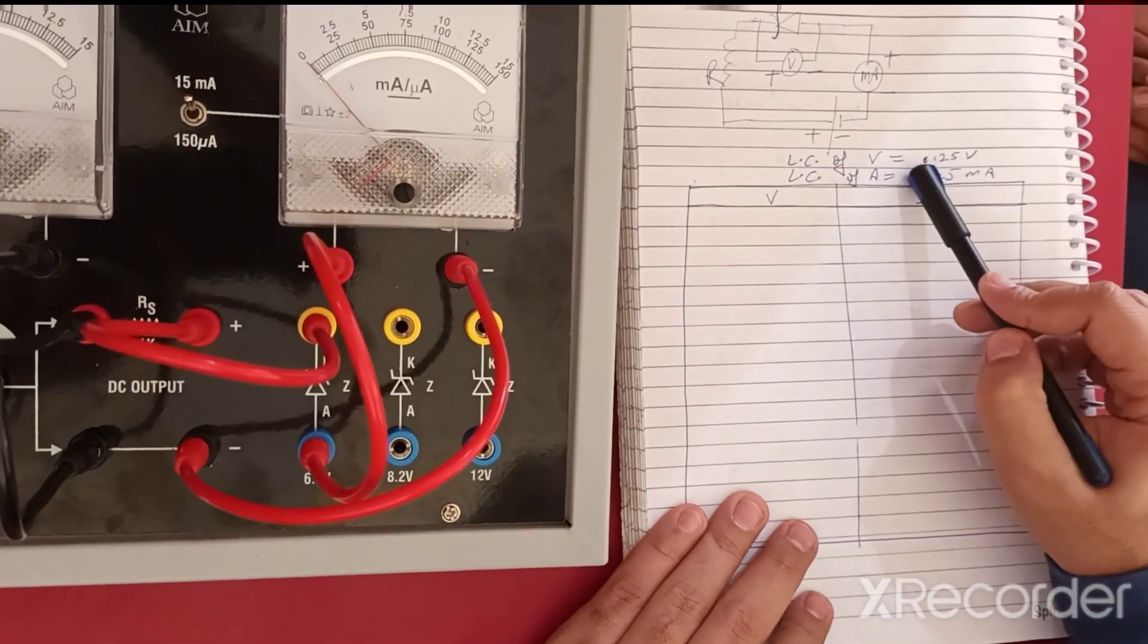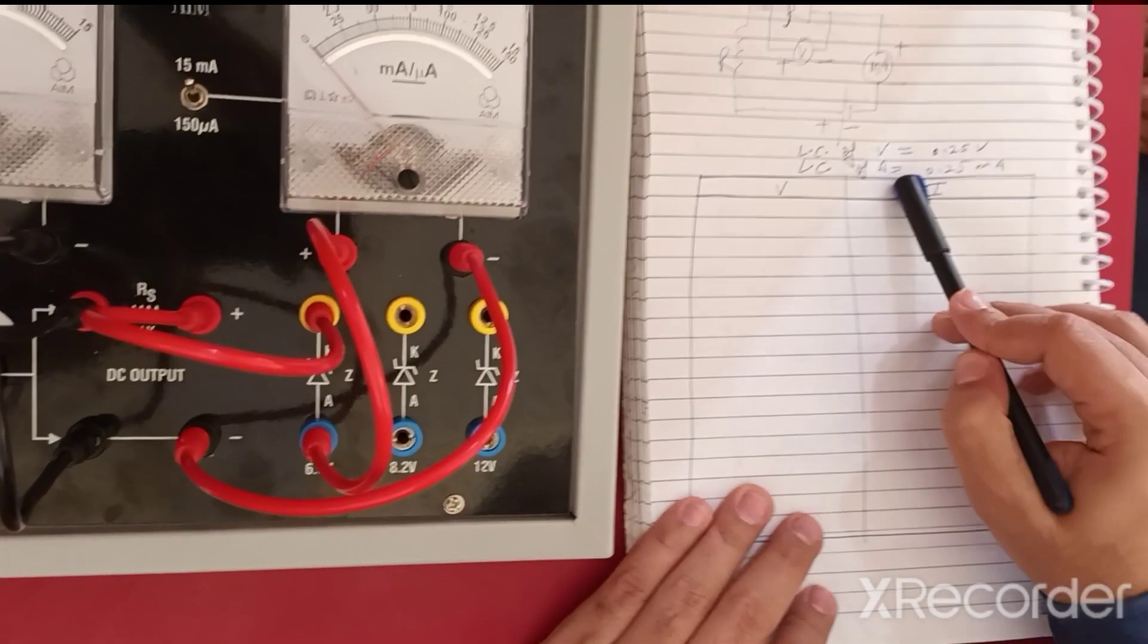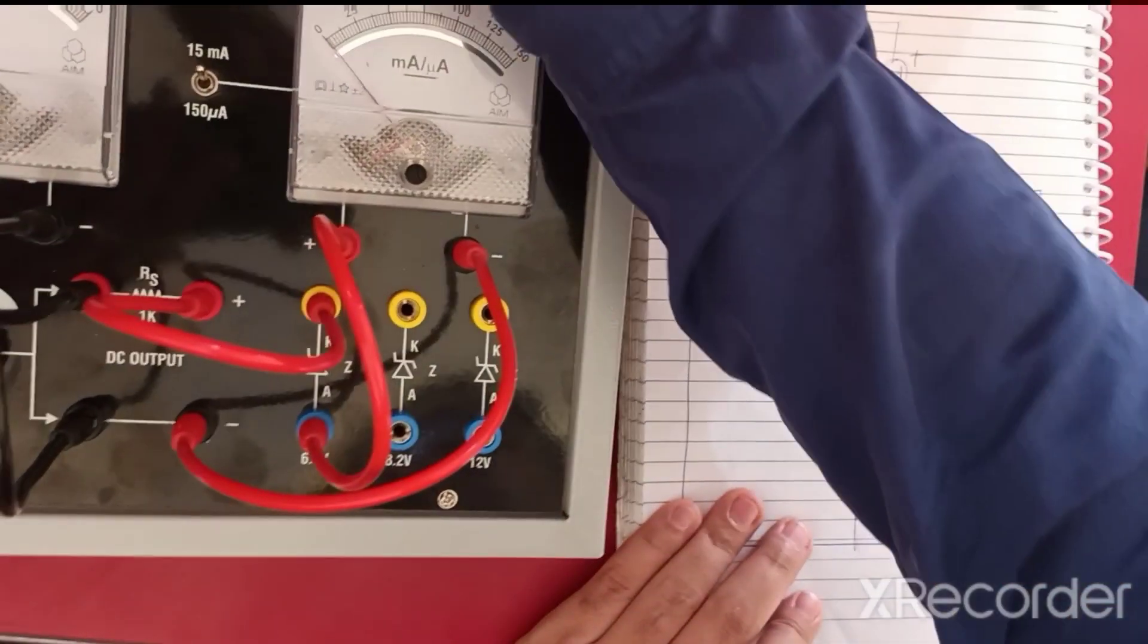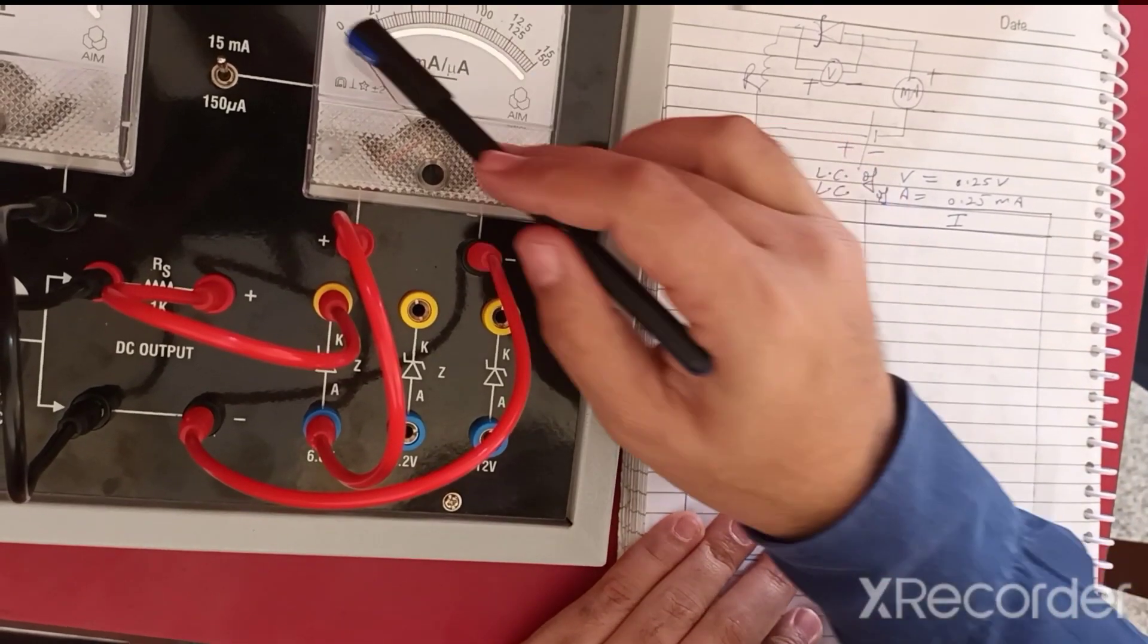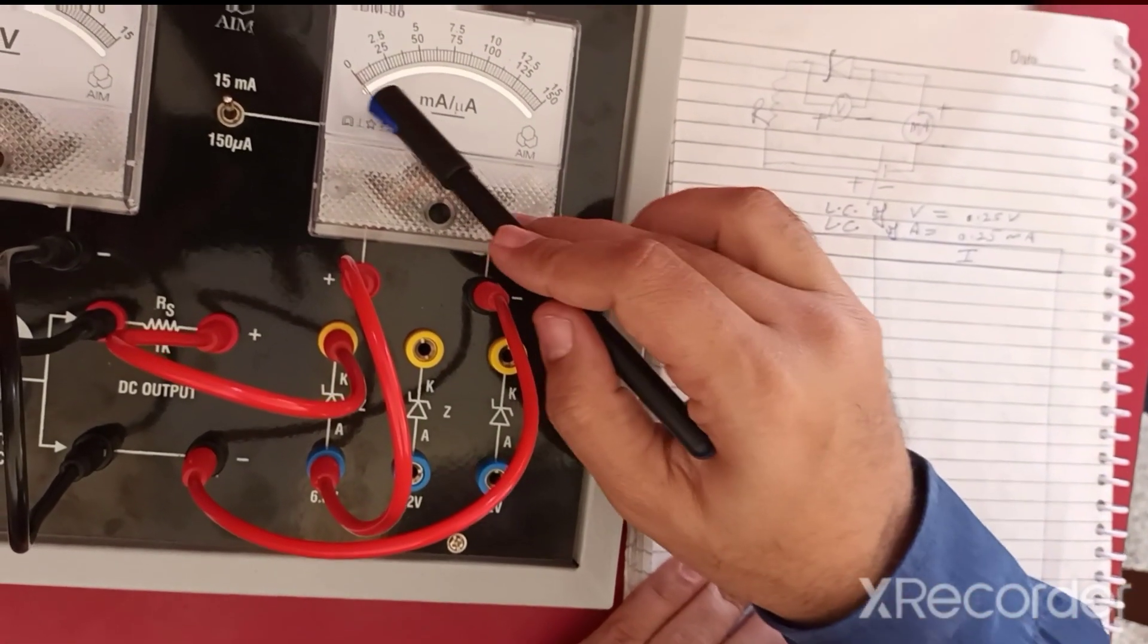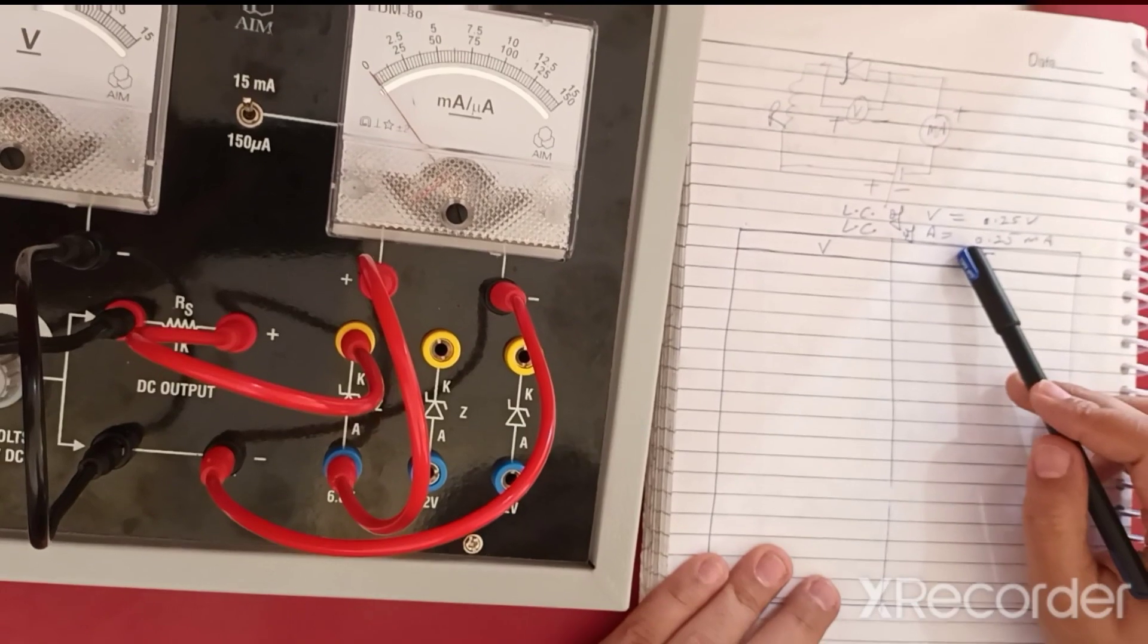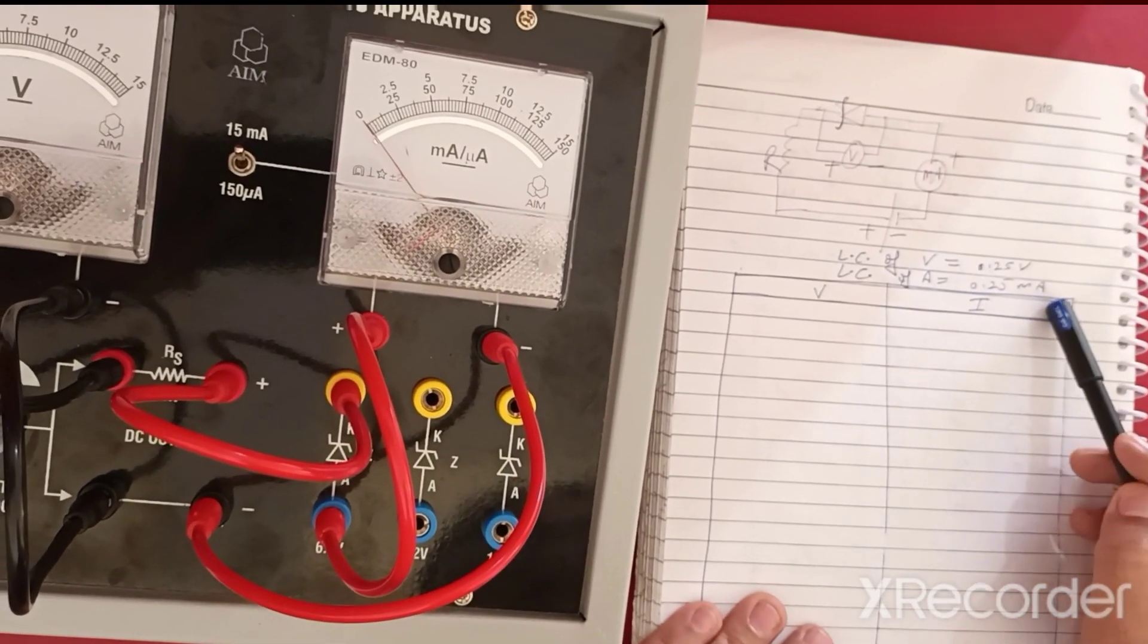For the milliamperes, for 10 divisions it's 2.5, so for one division it is 0.25 milliamperes.